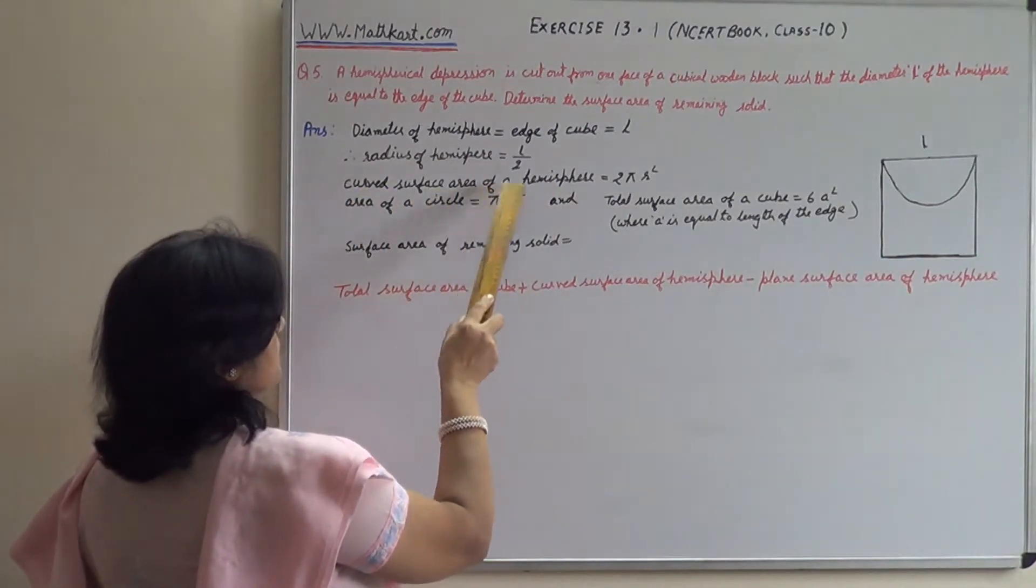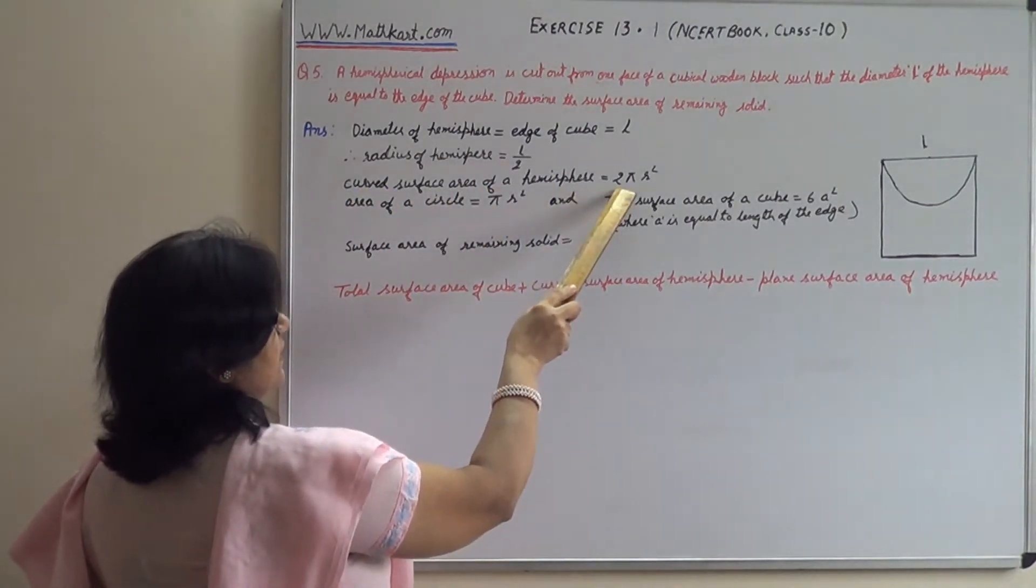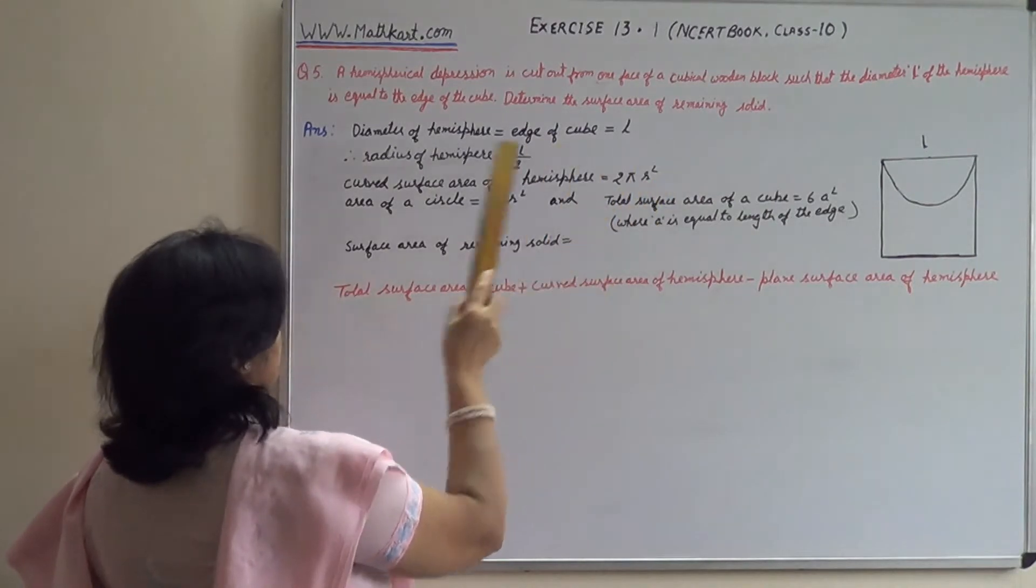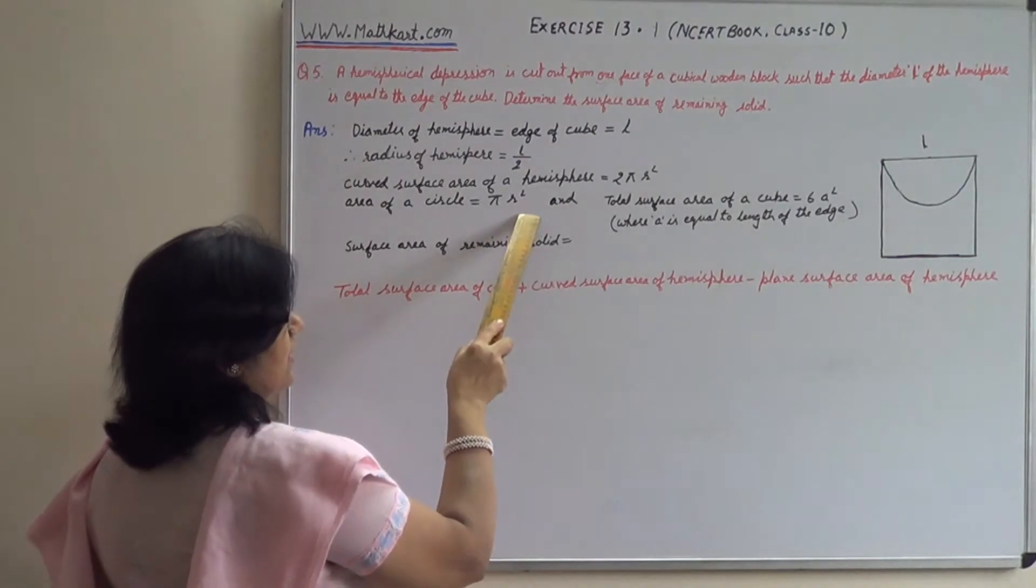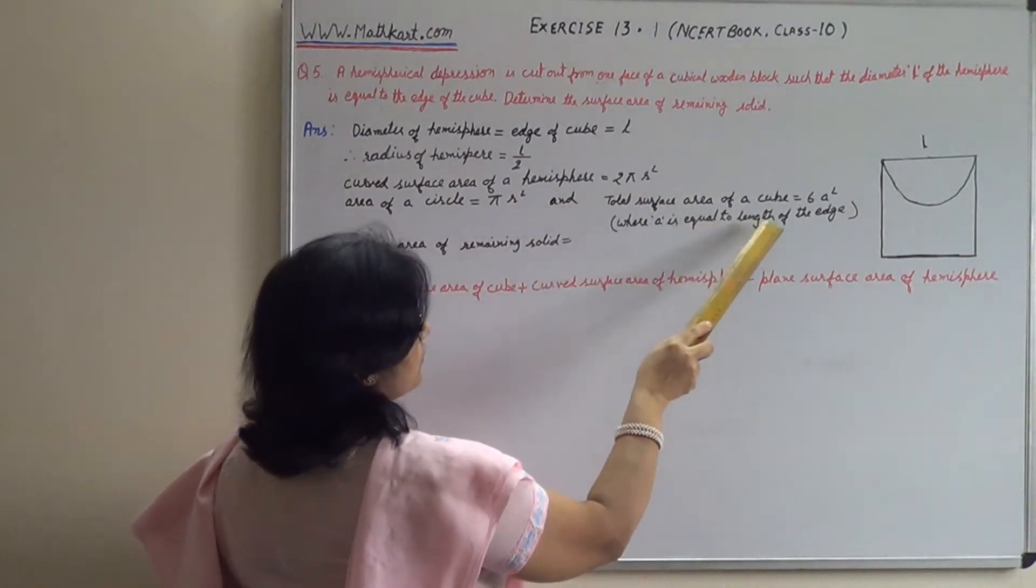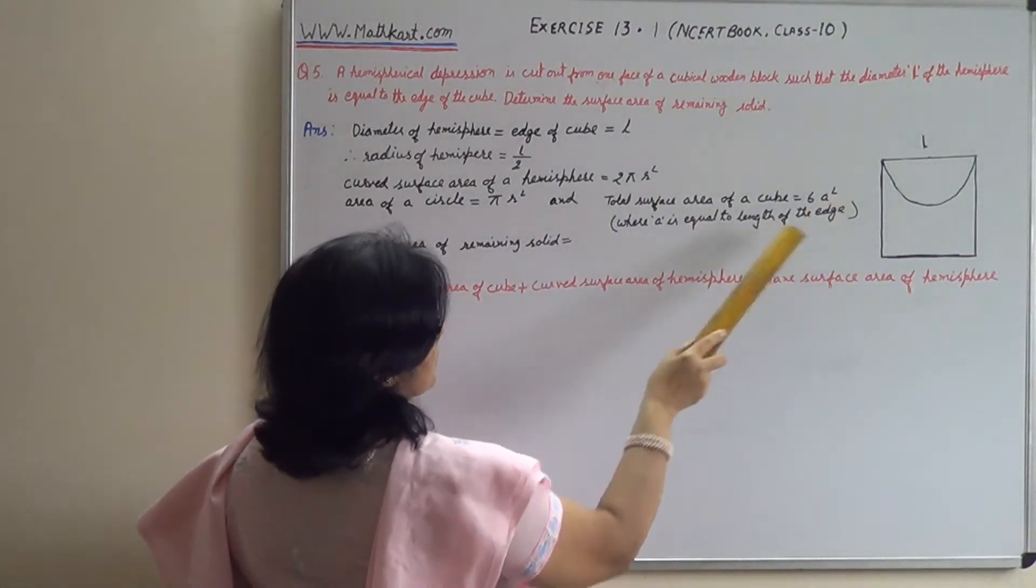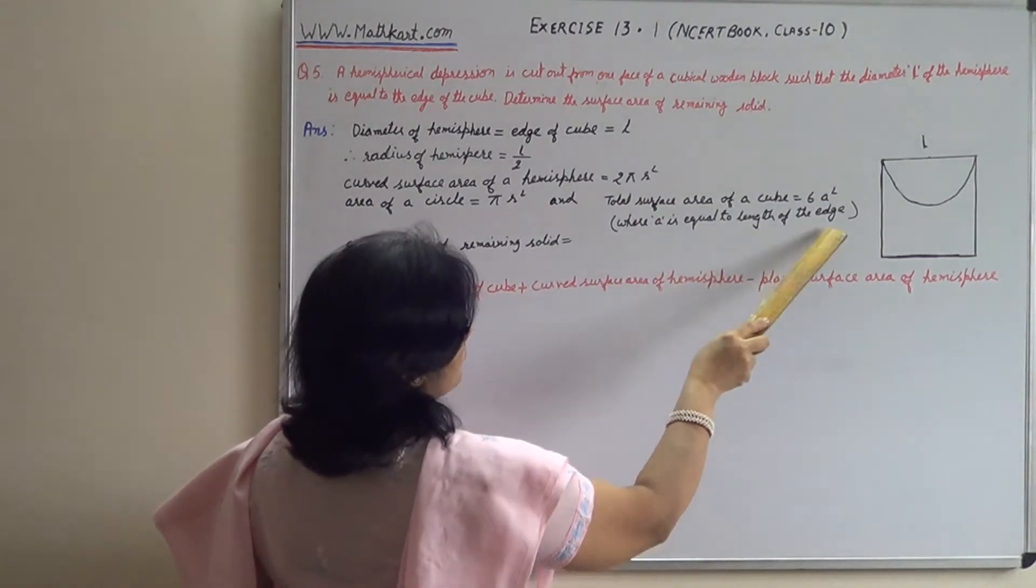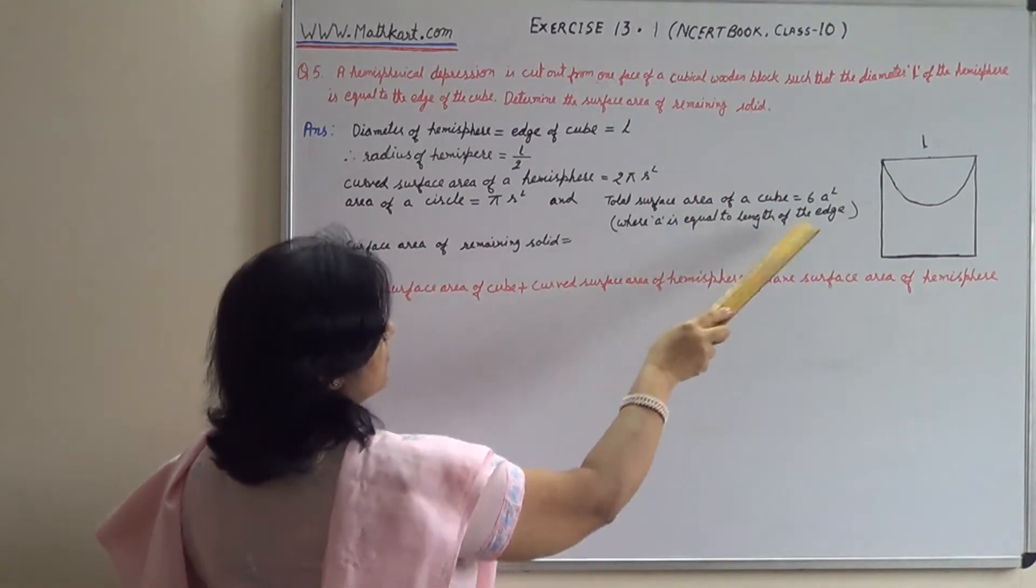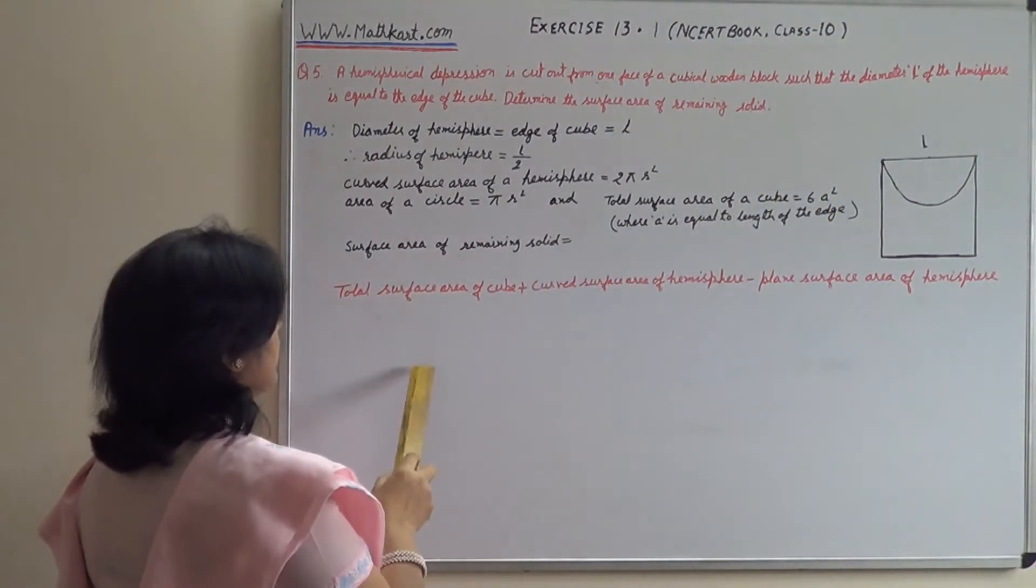Curved surface area of a hemisphere, we know, is 2 pi r squared. Area of a circle is pi r squared. And total surface area of a cube is 6 A squared, where A is equal to the length of the edge. Here our A is L, which is given.